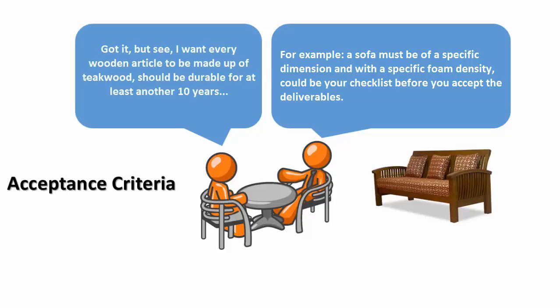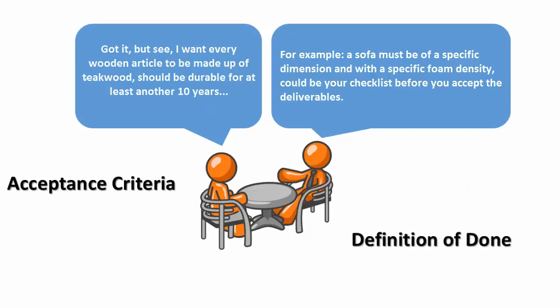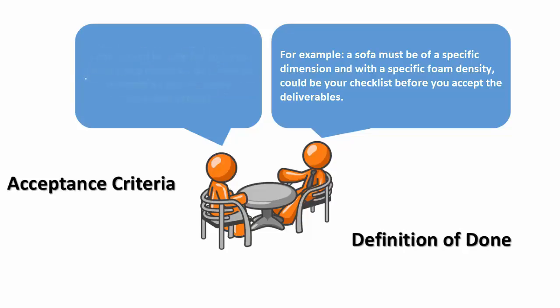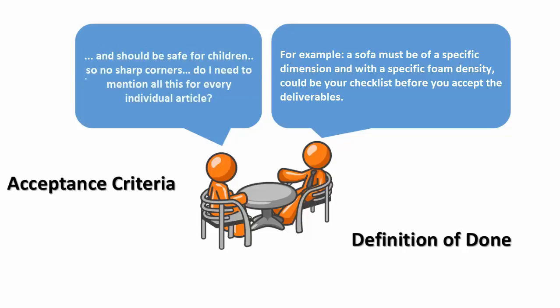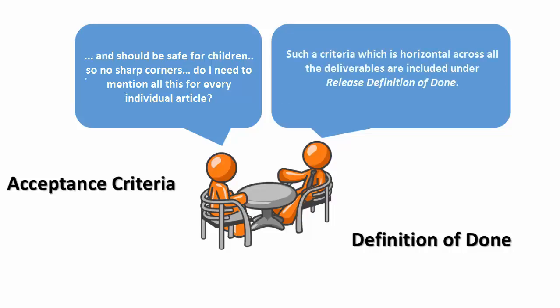I want every wooden article to be made of thick wood, durable for at least another 10 years, and safe for children — so no sharp corners. Do I need to mention all this for every individual article? Such criteria which are horizontal across all deliverables are included under the release definition of done.